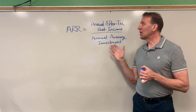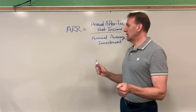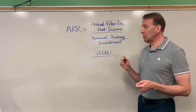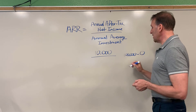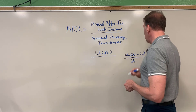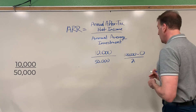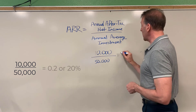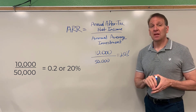Let me go through a quick example. Assume our annual after-tax net income is given as $10,000. For the annual average investment, let's say our beginning book value was $100,000 and our salvage value is zero. So I take $100,000 minus zero divided by two, which gives me $50,000 as the average investment. That gives us an accounting rate of return of 20% — $10,000 divided by $50,000. The accounting rate of return is that simple.